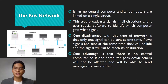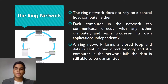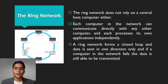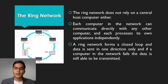The last topology is the ring network. The ring network does not rely on a central host computer either. Each computer in the network can communicate directly with any other computer, and each processes its own applications independently. The ring network forms a closed loop and data is sent in one direction only. If one computer in the network goes down, the data is still able to be transmitted.